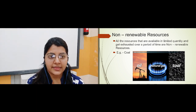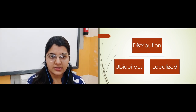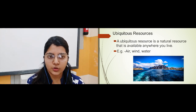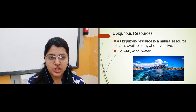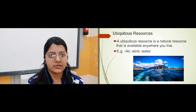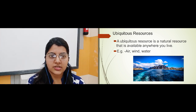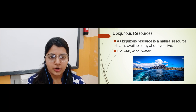Now the last part: resources on the basis of distribution, under which we have ubiquitous resources and localized resources. Ubiquitous resources are natural resources present anywhere we live. For example, if I am living in Gujarat or in Maharashtra, I will be able to avail these resources because they are present all over the world — for example, air, wind, and water. These resources are present worldwide, wherever we live, so they are called ubiquitous resources.